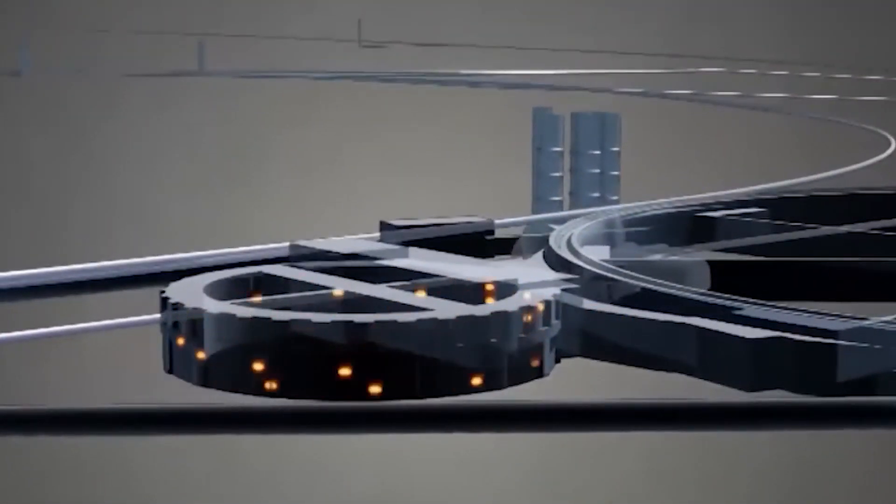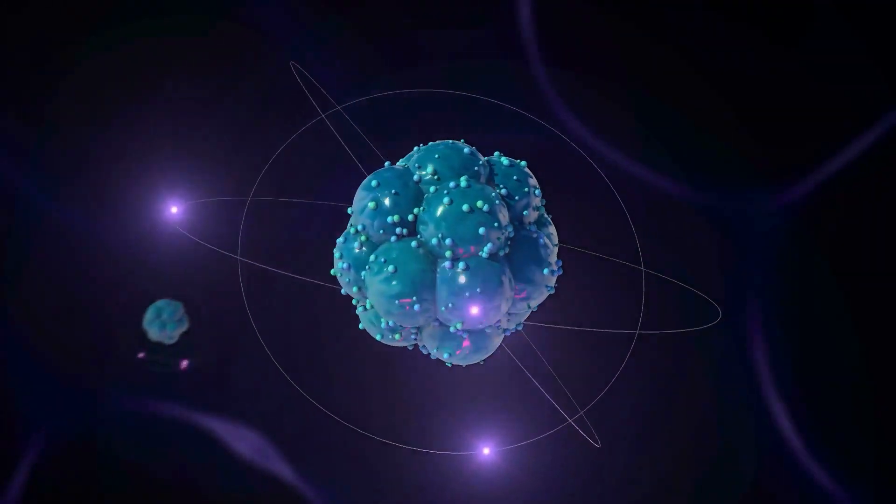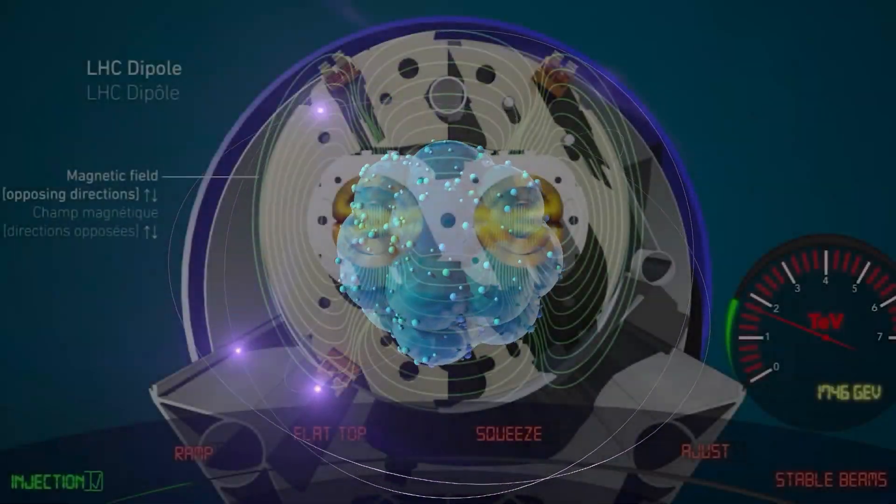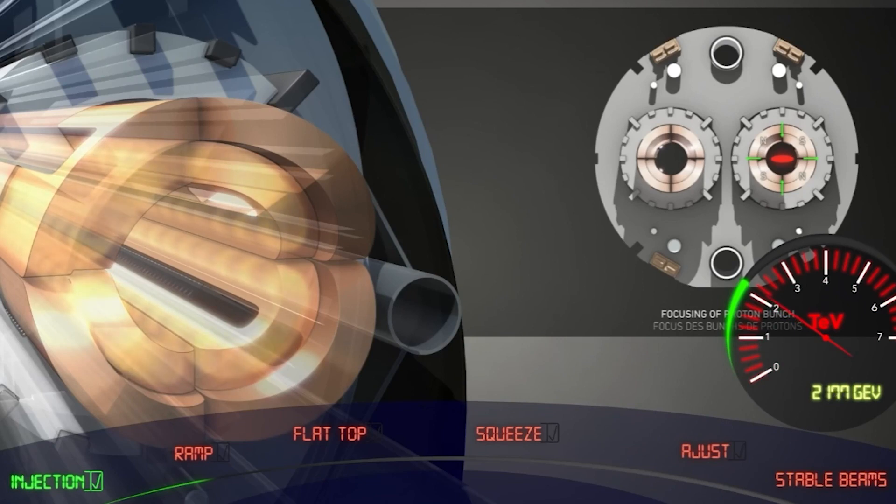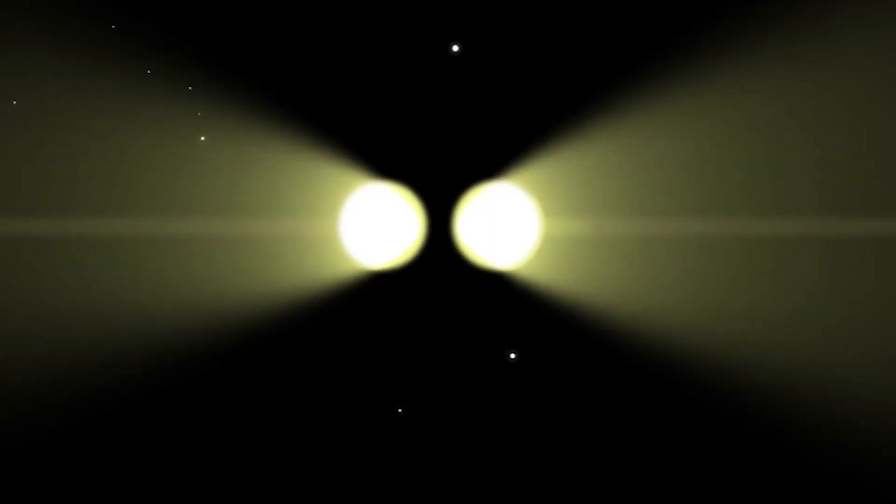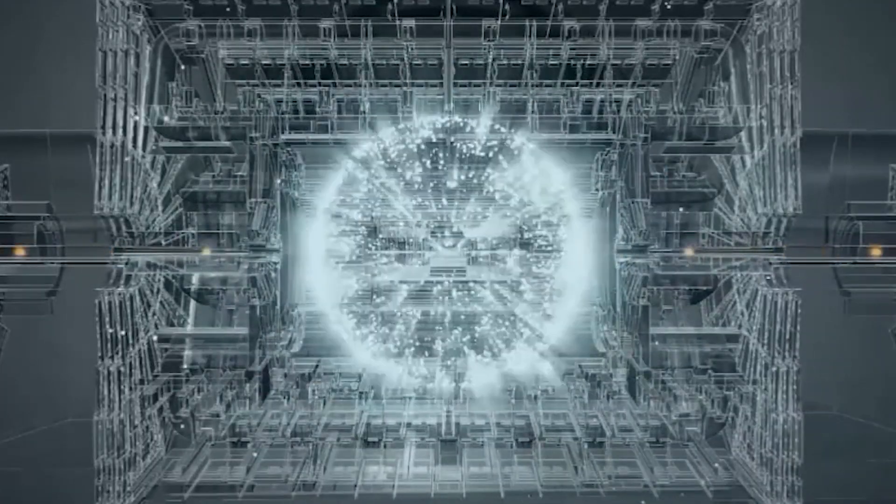Inside the LHC, particles perform an intricate dance. Proton beams, the primary focus of the LHC, circulate the accelerator ring. Thousands of magnets, including dipole and quadrupole magnets, bend and focus the beams, ensuring they stay on track. Just before the particles collide, another type of magnet squeezes them closer together, increasing the chances of interactions.